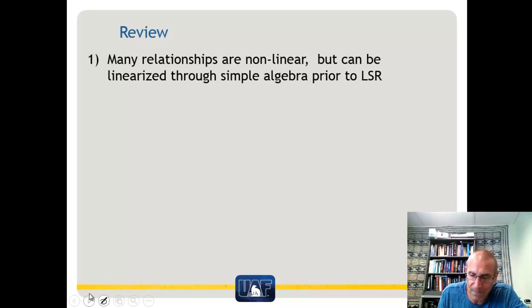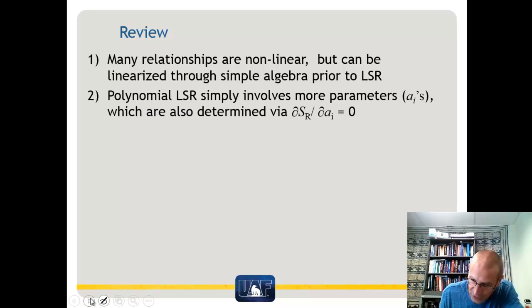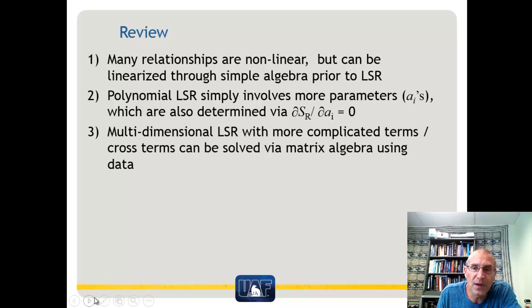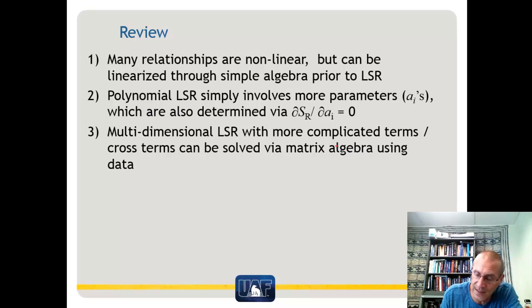To review: many nonlinear relationships can be linearized through simple algebra, allowing regular least squares regression. Polynomial regression adds more parameters a sub i, determined by taking partial derivatives of SR with respect to each parameter and setting them to zero. For multidimensional regression with complicated cross terms, you build a rectangular Z matrix from all your data values and solve for the parameters a sub i using matrix algebra.